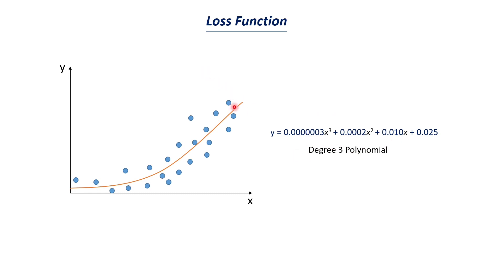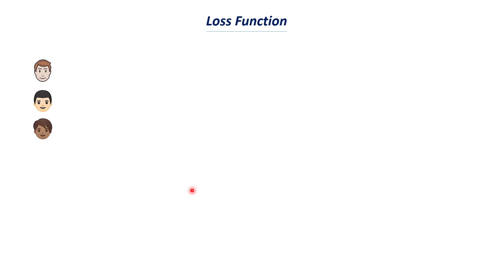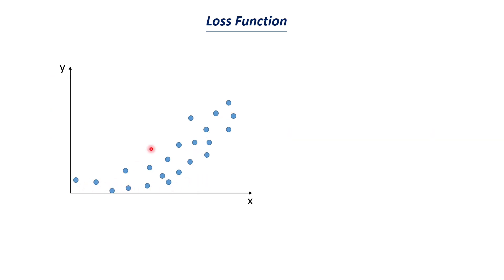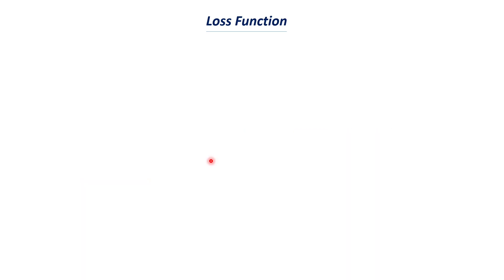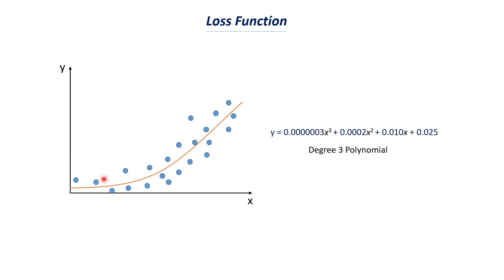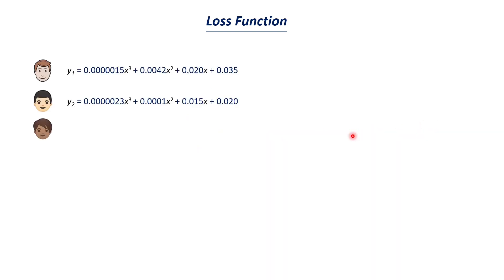Now, let's say there are three people and we ask them to look at this data (represented by blue circles) and find a curve that best fits it. We know the proper curve, but those three people don't. The first person finds an equation y1 (e.g., 0.000015x³ + 0.0042x² + …), the second person finds y2, and the third person finds y3 — each giving a different equation (set of parameters) for the same degree-3 polynomial model.